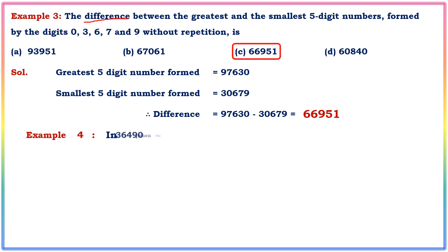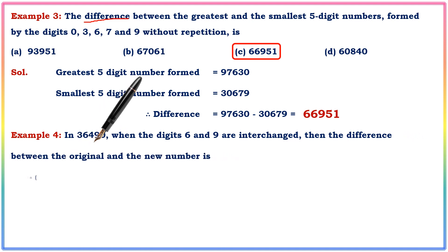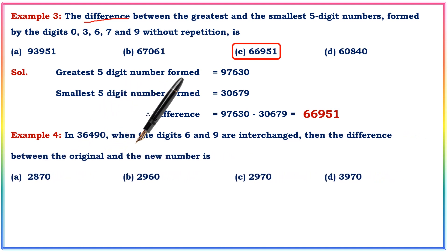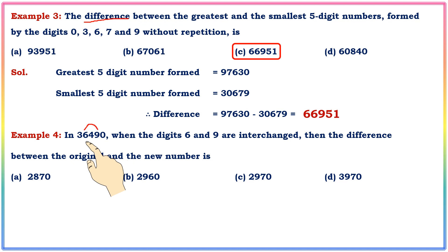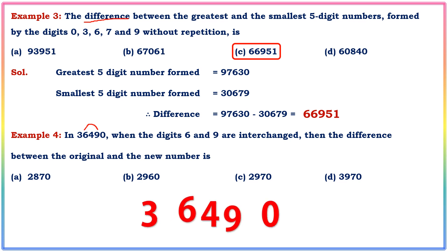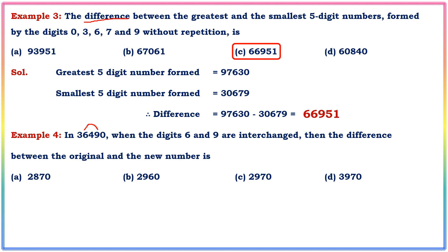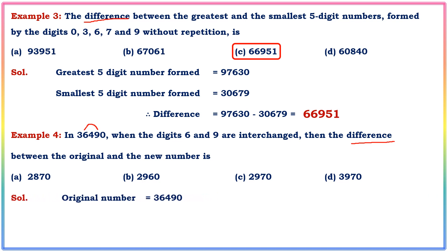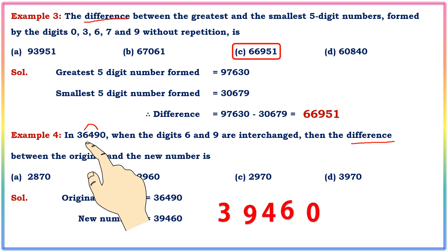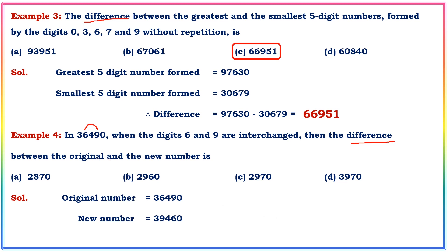Next example: the number 36490. When the digits 6 and 9 are interchanged, the new number becomes 39460. The difference is found by subtracting: 39460 minus 36490 equals 2970.